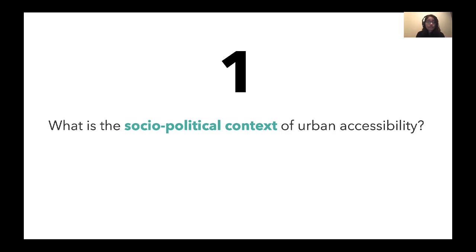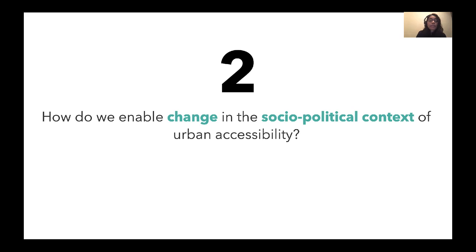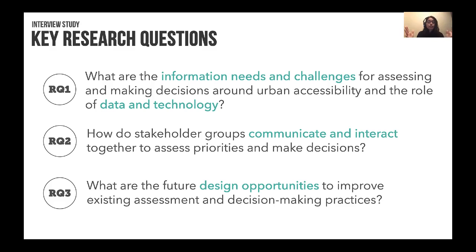We asked two big questions. The first is: what is the socio-political context of urban accessibility and how do we enable change within this context? To break these big questions down, we asked three specific questions. What are the information needs and challenges for assessing and making decisions around urban accessibility, and how do people use technology for doing it? Second, how do people communicate and interact together to assess priorities and make decisions? And third, where are the design opportunities to improve existing practices around urban accessibility?